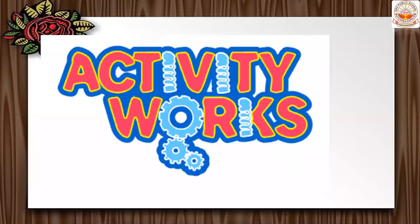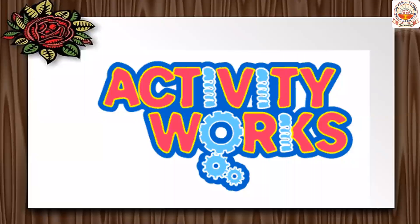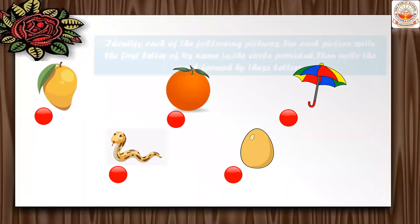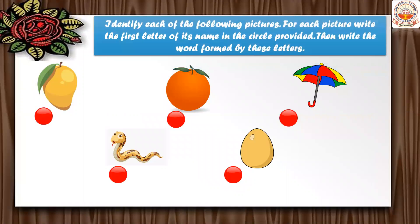Before that, let us do a small activity. Identify each of the following pictures. For each picture, write the first letter of its name in the circle provided, then write the word formed by these letters. You have to see the picture and write the name.